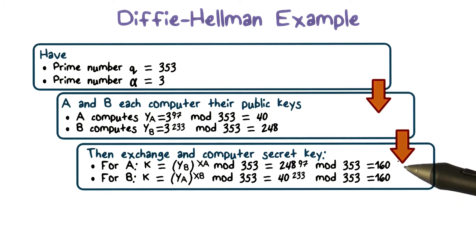So as you can see, by exchanging yA and yB, both users A and B compute the same secret value, which is 160. And this would become the shared secret key between users A and B.